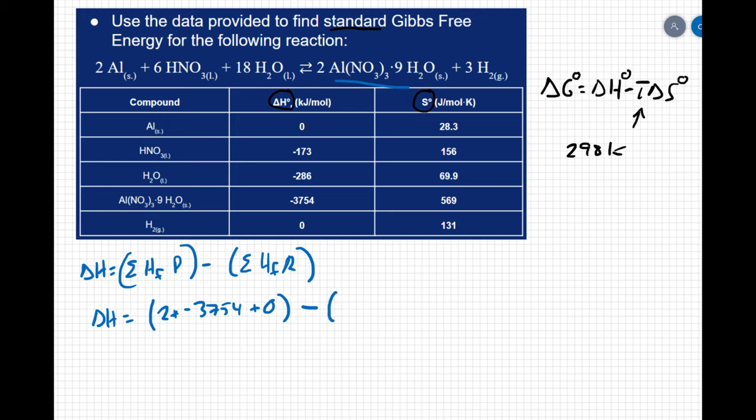I have 2 aluminums and again aluminum is a pure element so its heat of formation is zero. 6 hydrogen nitrates so I'm going to do 6 times negative 173 plus 18 waters so I'm going to do 18 times negative 286. I have to be really careful about my positive and negative signs but when I calculate this I get a delta H of negative 1322 kilojoules.